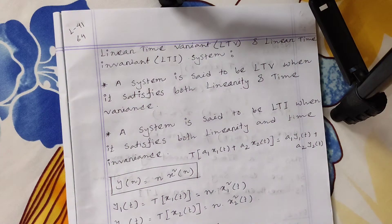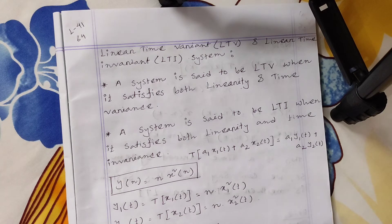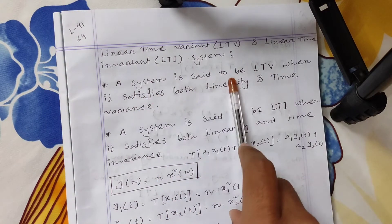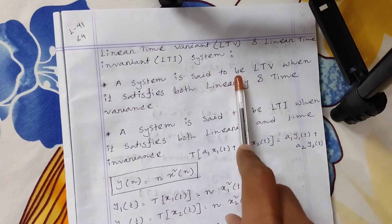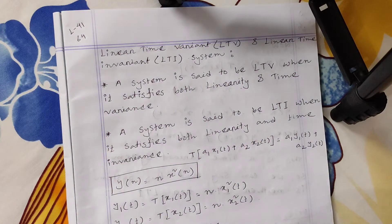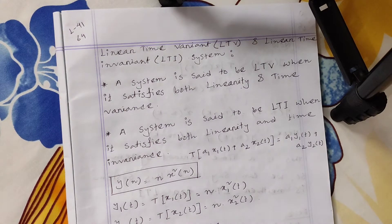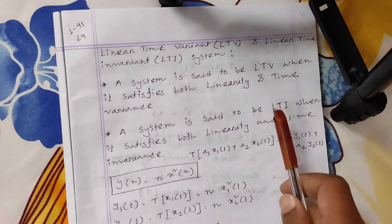In this class we will talk about linear time variant and linear time invariant systems. We already know about linear systems, time variant systems, nonlinear systems, and time invariant systems. A system is said to be LTV — linear time variant — when it satisfies both linearity and time variance. If a system shows both linearity and time invariance, we call it an LTI system.